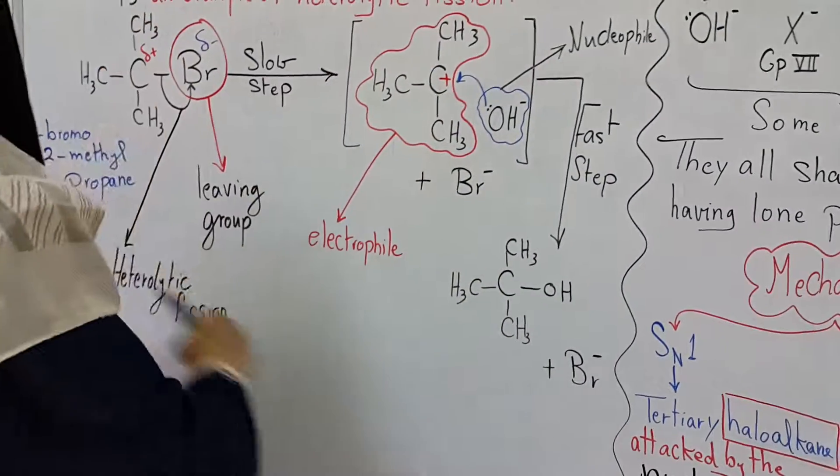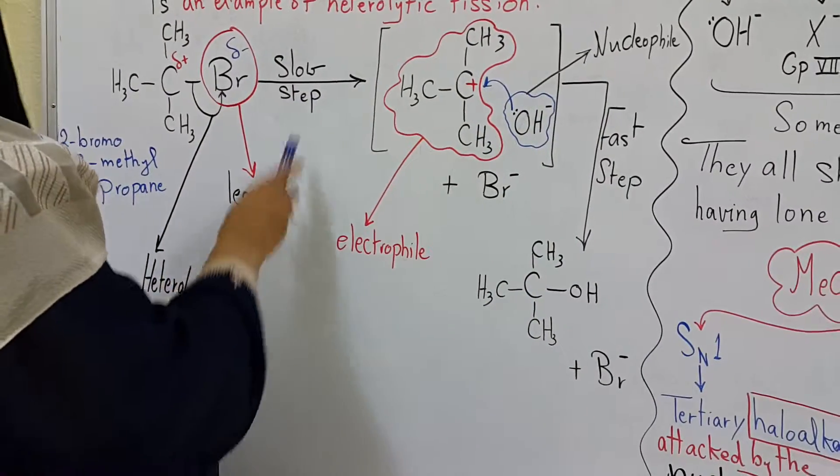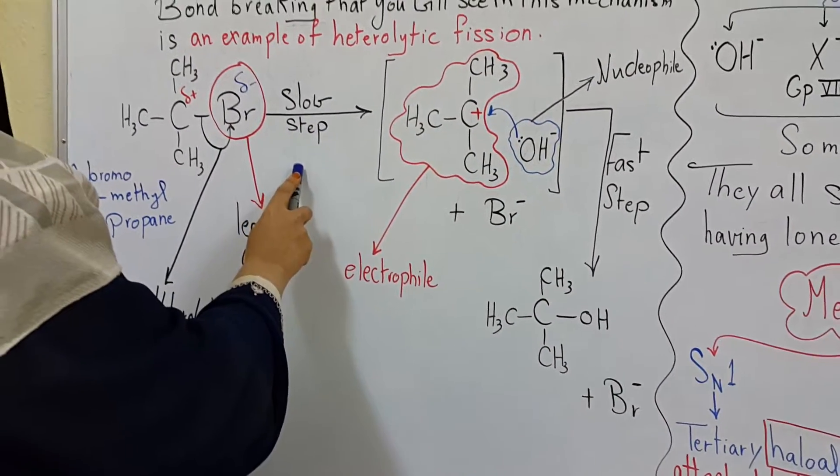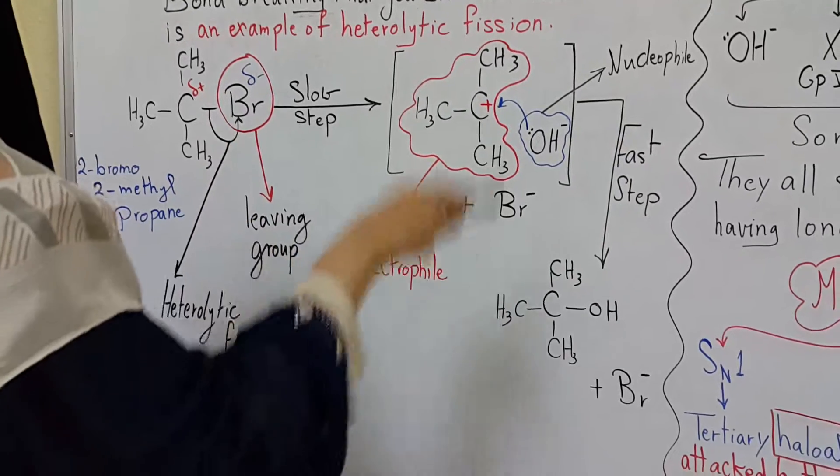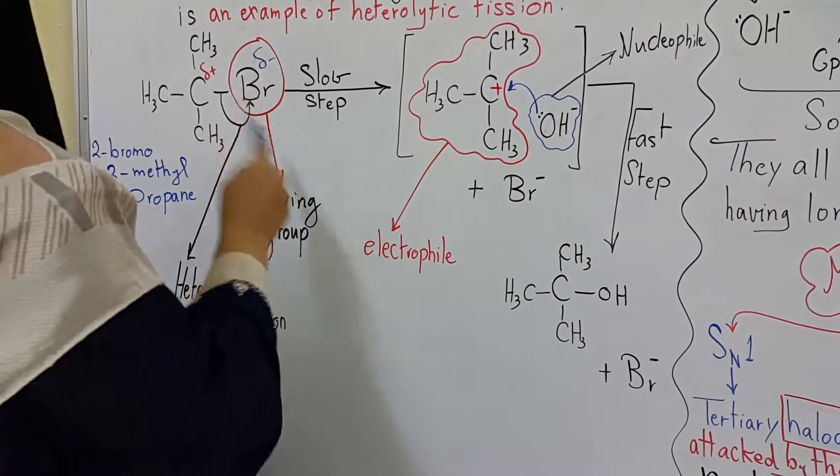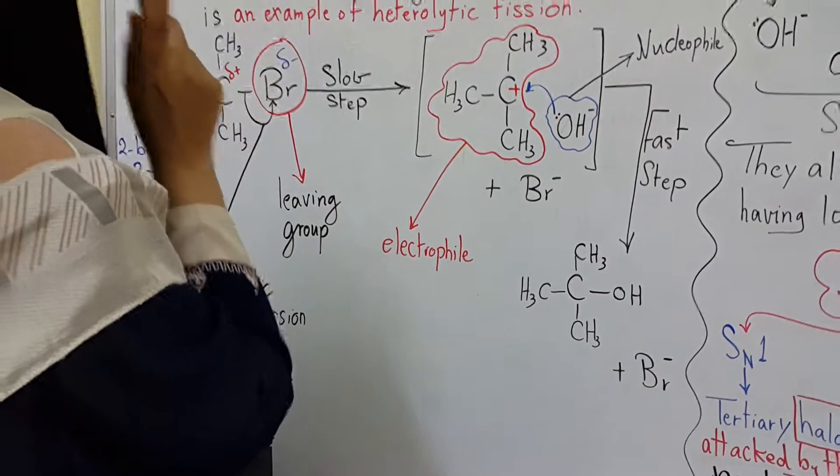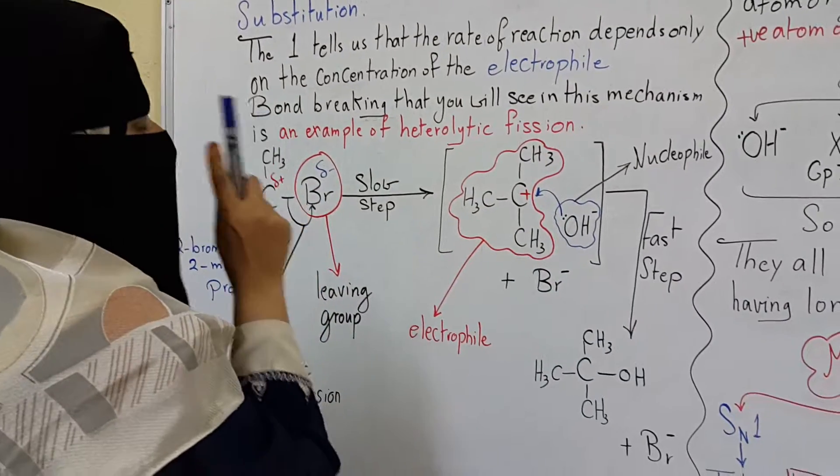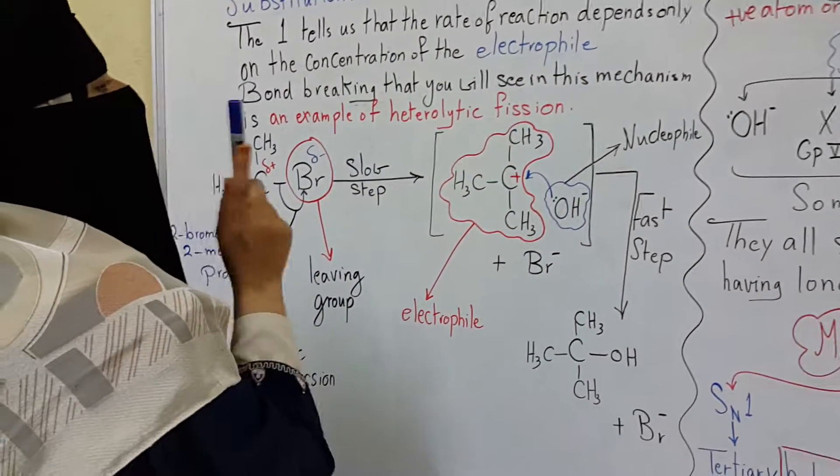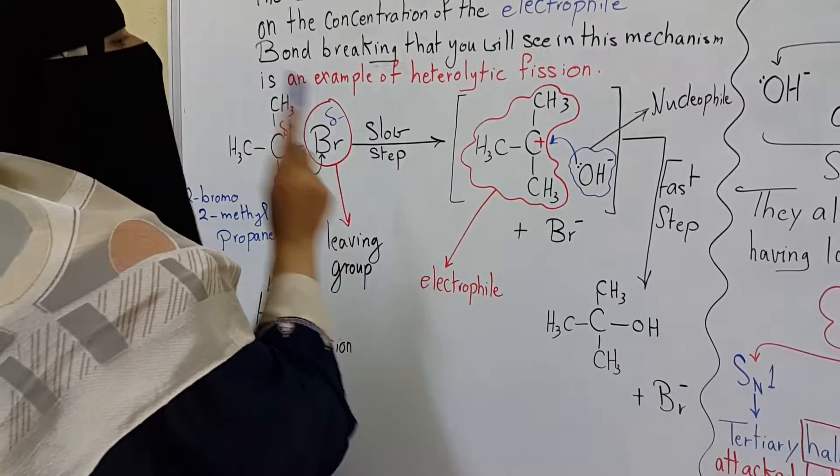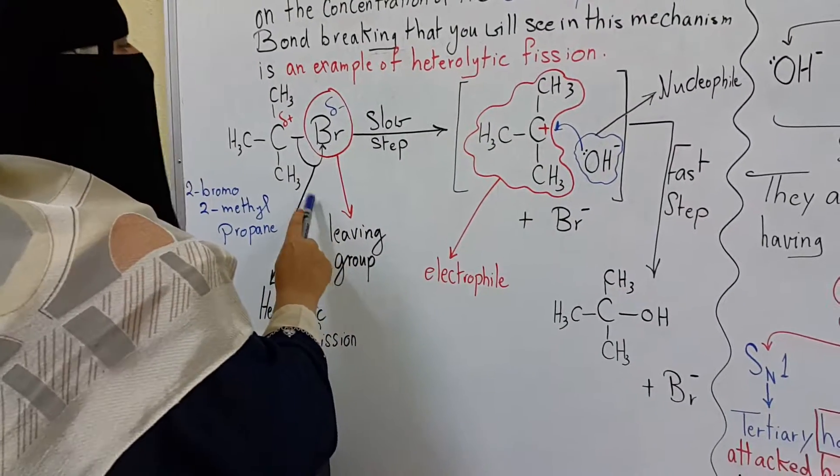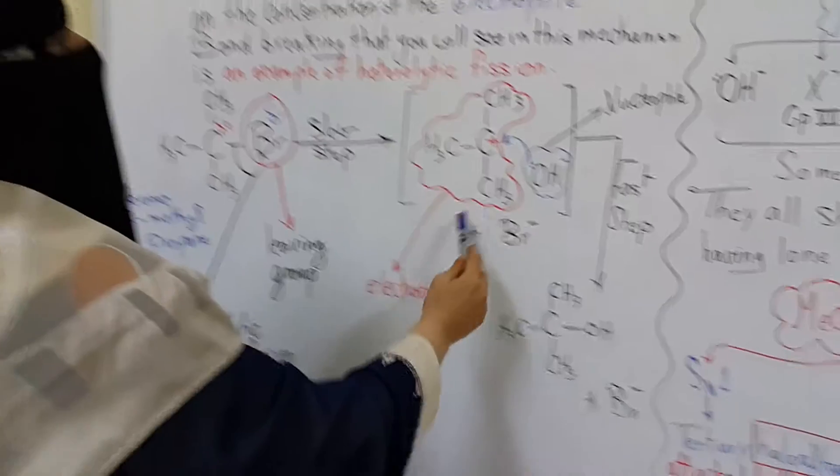Which step determines the rate of reaction? The slow step. In this reaction, rate depends on the concentration of the haloalkane entering the reaction. That's why we name it nucleophilic substitution of the first order. The one refers to rate depending on the concentration of one reactant, which is the haloalkane.